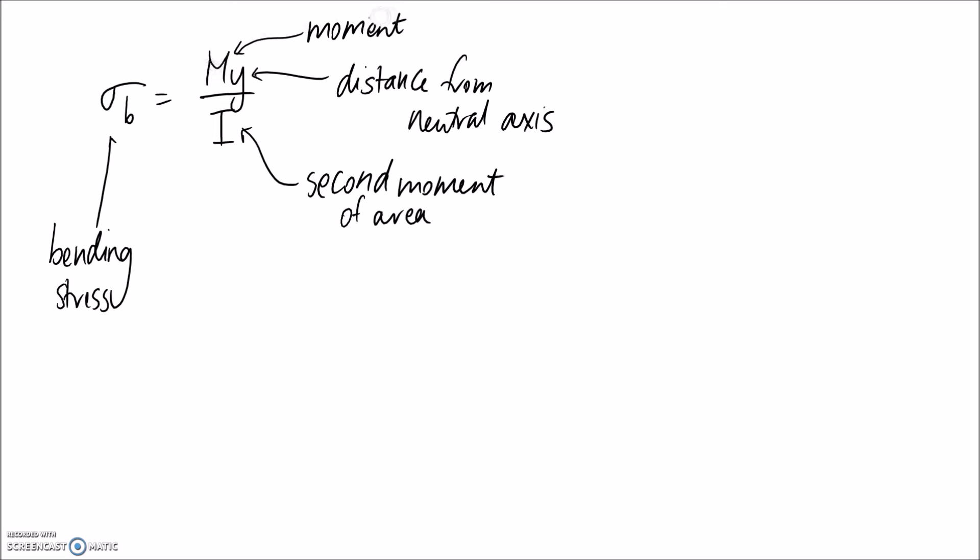The moment in this equation is going to come from you drawing a bending moment diagram and looking for what the moment is at your point of interest along the beam. Y, same as before, is the distance that you move from the neutral plane. For I, it's your second moment of area; this comes from your calculation for your cross section. This was covered in another video, so if you go back and have a look at that.